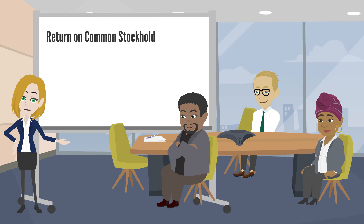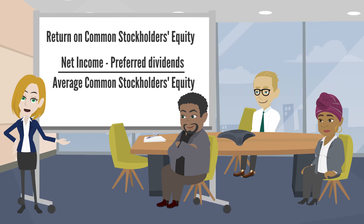Return on common stockholders' equity is computed by taking the income available to common stockholders — so net income minus any preferred dividends — and dividing that by average common stockholders' equity, making sure to exclude any preferred stock. If a company has only one class of stock, then the formula is simply net income divided by average stockholders' equity.